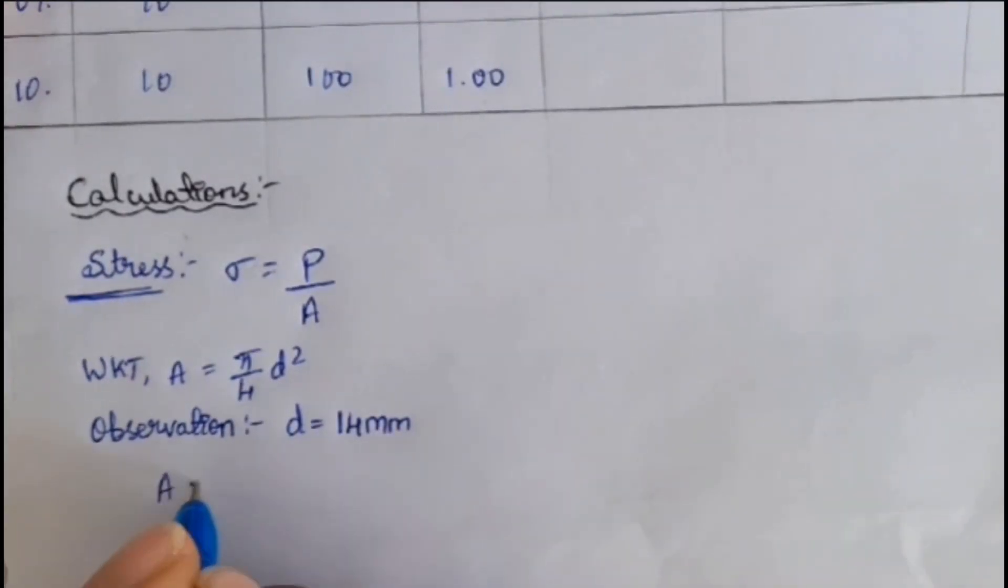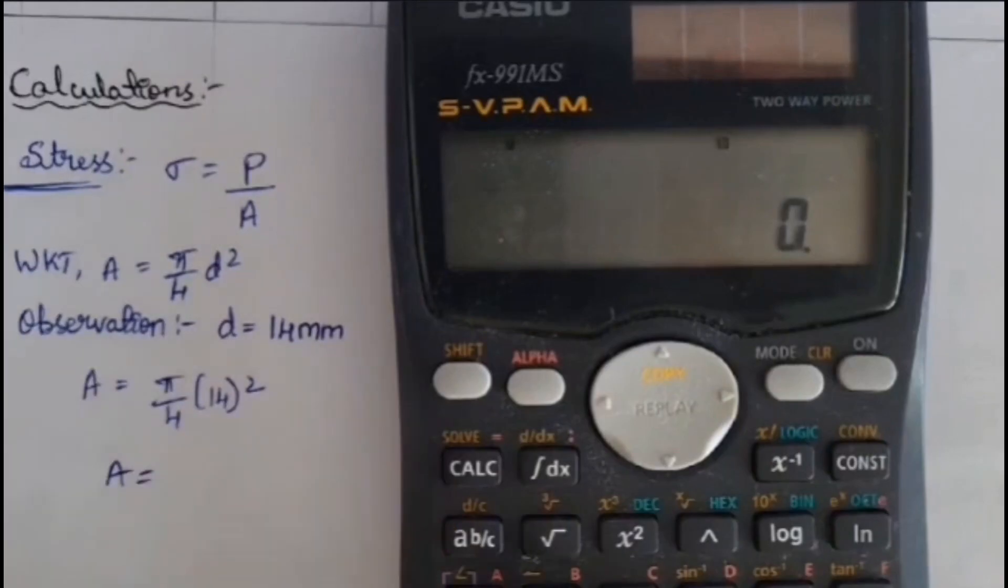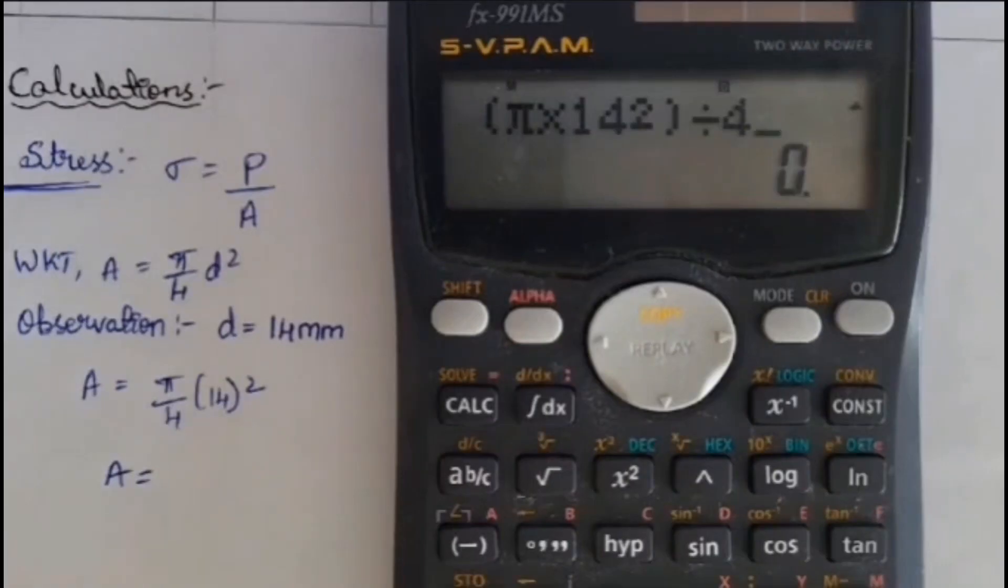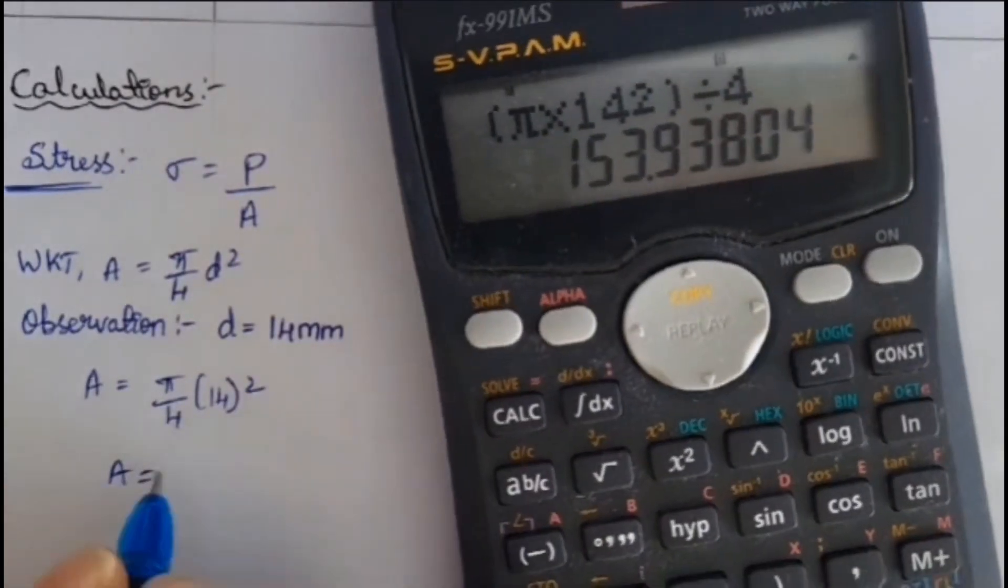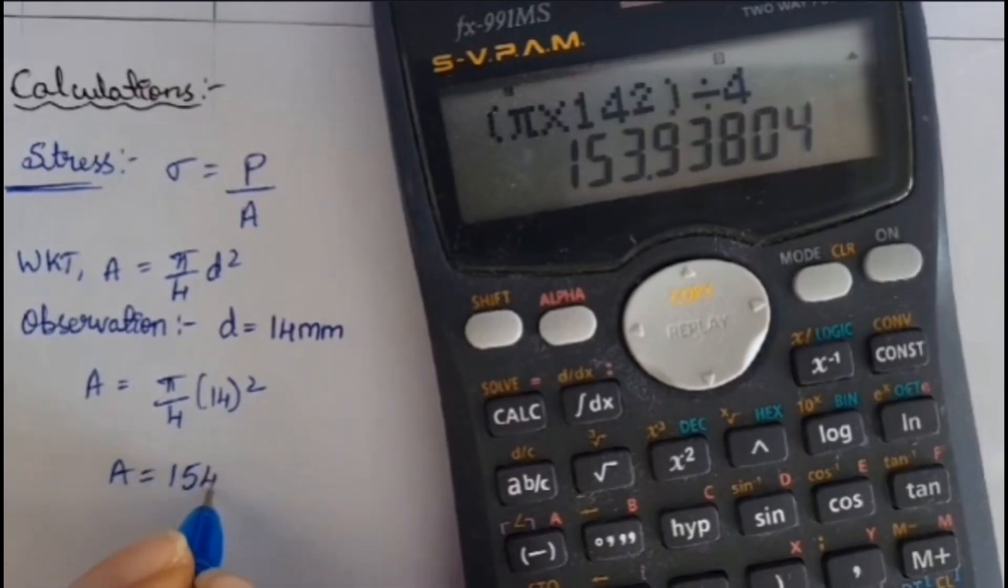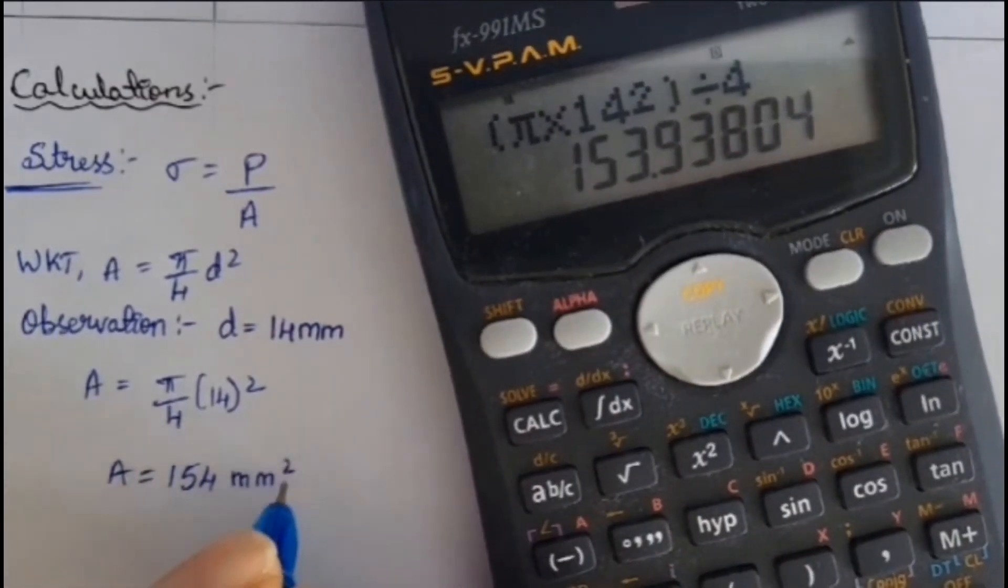So, formula, we will be substituting pi by 4 into 14 square. From the calculator, we will be getting that pi by 4 d square is equal to... See, let's how to calculate pi by 4 d square. So, we will be getting 153.9. Approximately, we can take it as 154.00 mm square. This is the area value.